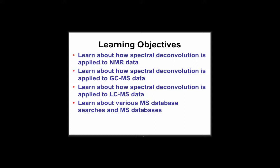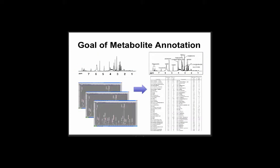And then we're going to look at a variety of mass database searches and databases. The goal in metabolomics is to go essentially from spectra — whether it's GC-MS, LC-MS, NMR, whatever — to lists of compounds and their concentrations. The concentrations can be relative or absolute. My own preference is to have absolute concentrations, and that's certainly a growing trend in the field.